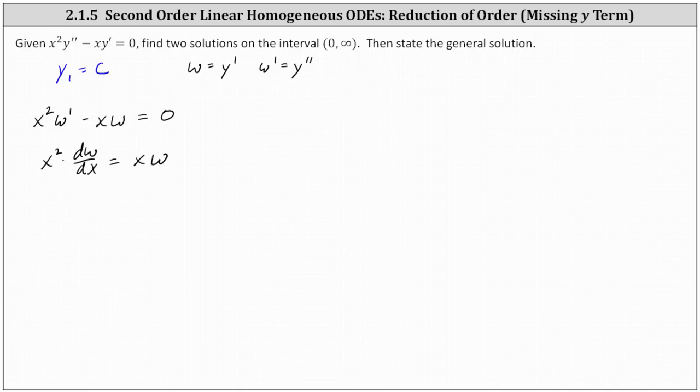This gives us x squared times dw dx equals xw. Now we will multiply both sides by one over w, and also multiply both sides by one over x squared. This gives us one divided by w dw dx equals x divided by x squared. Notice the right side simplifies to one over x. We can also think of multiplying both sides by dx, which gives us one divided by w dw equals one divided by x dx.